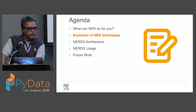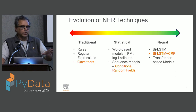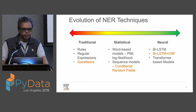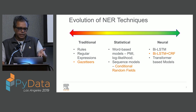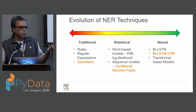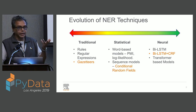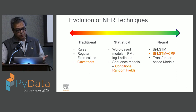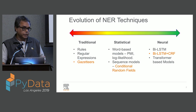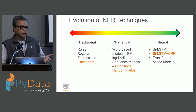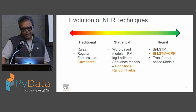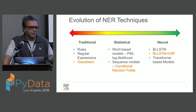I'm going to go through a whirlwind tour of NER techniques. Typically NER techniques go from the traditional to the neural. Traditional approaches include rules or regular expressions — rules could be things like finding proper nouns where words must begin with a capital letter. Regular expressions could be things like looking for dates and times in different formats. Gazetteers are basically just dictionaries of terms where you find instances of those terms in your text. It's old school, but don't knock it — it's very useful.